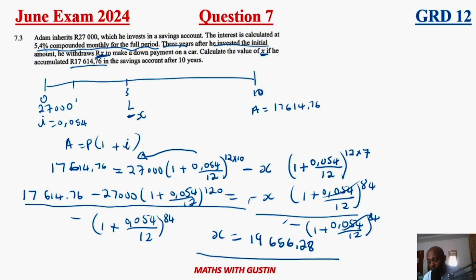What I'm getting in this case is 19,656.28. Therefore, that's the amount of money that was withdrawn. I am Gaston Mampala. Let me see you on the next upload where we will be doing question eight.